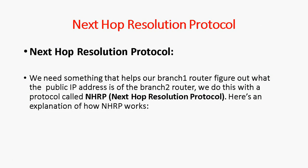Hi friends, this is Gautam. In this video tutorial I am going to discuss about Next Hop Resolution Protocol. This is a continuation of the introduction to DMVPN. We need something that helps our branch 1 router to figure out what the public IP address is of the branch 2 router. We do this with the protocol called Next Hop Resolution Protocol. In DMVPN, branch office 1 and branch office 2 can communicate directly, but the branch 1 router needs to know the public IP address of branch 2 router.